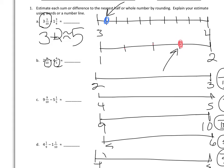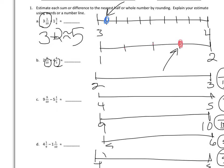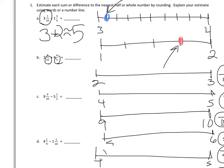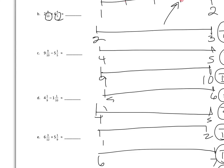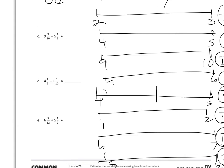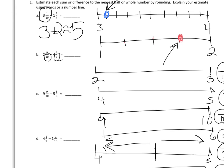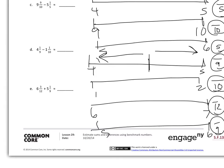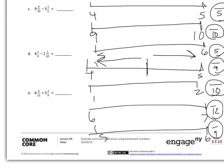One of the strategies we like to use is that if the number is more than half of the distance between the two whole numbers, it should round up. If it's less than half, it should round back. Depending on the number, that's the best approach, but as you can see in most of these, students can visually see what the number is closer to.